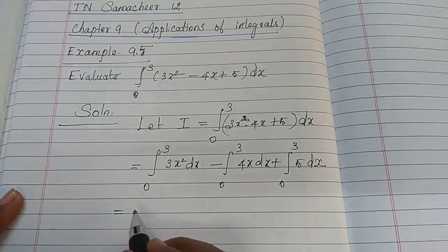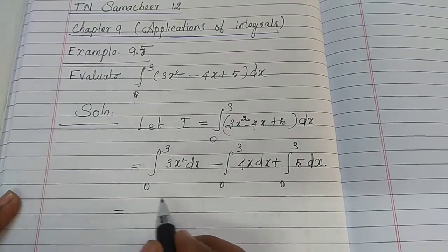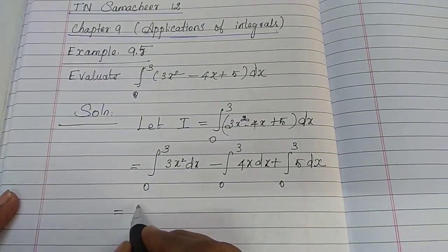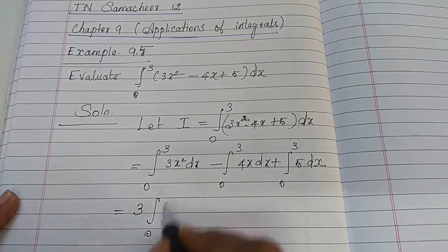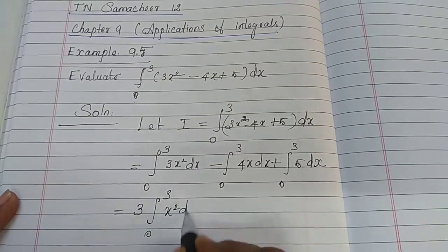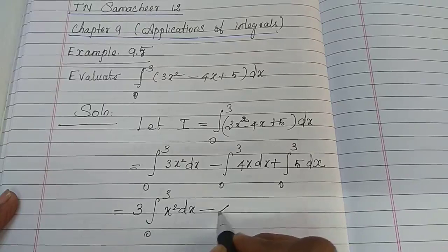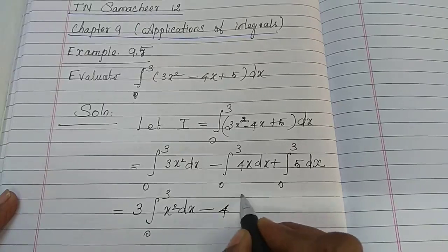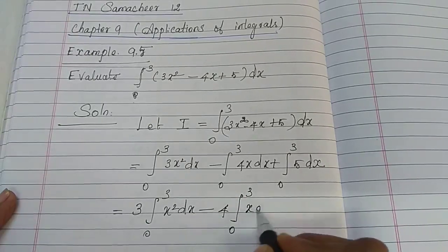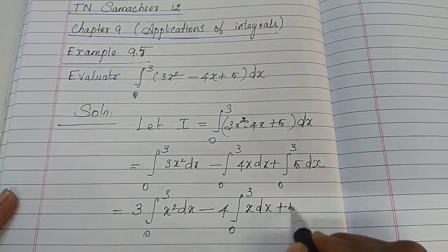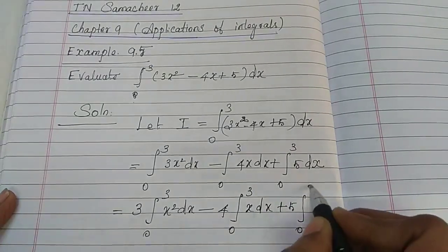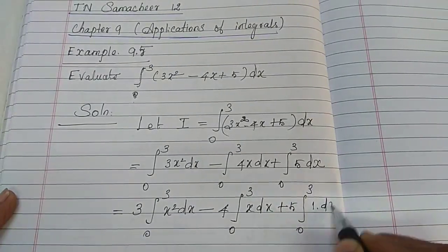Take the constant term outside the integral for each term. Therefore: 3 times integral 0 to 3 of x squared dx, minus 4 times integral 0 to 3 of x dx, plus 5 times integral 0 to 3 of 1 dx.